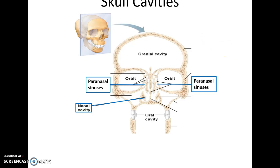When you look at the skull you see it has a variety of cavities to hold and protect delicate structures: the cranial cavity for the brain; the oral cavity for the tongue and entrance of the digestive system; the nasal cavity for the entrance and exit of the respiratory system; the paranasal sinuses found inside bones of the skull that help lighten the skull and connect to the nasal cavity; and the right and left orbits for the eyeballs.